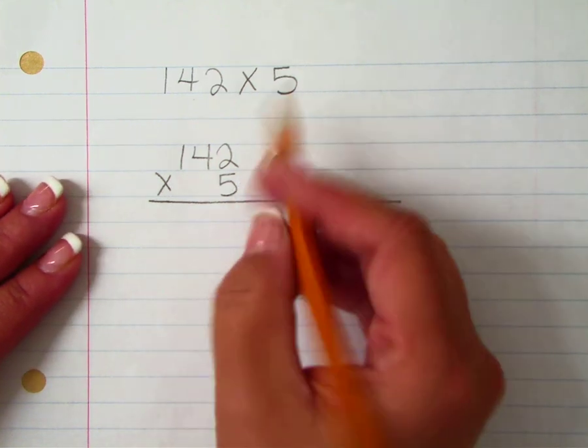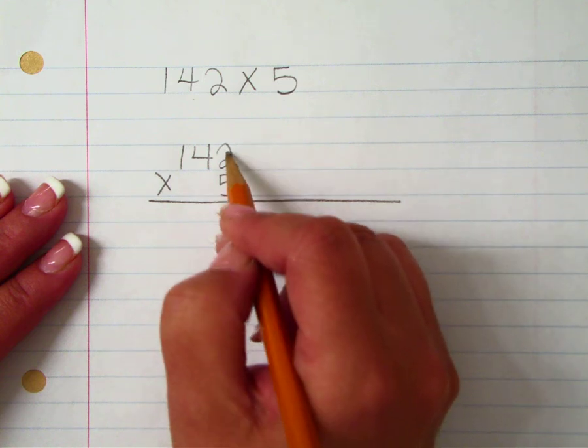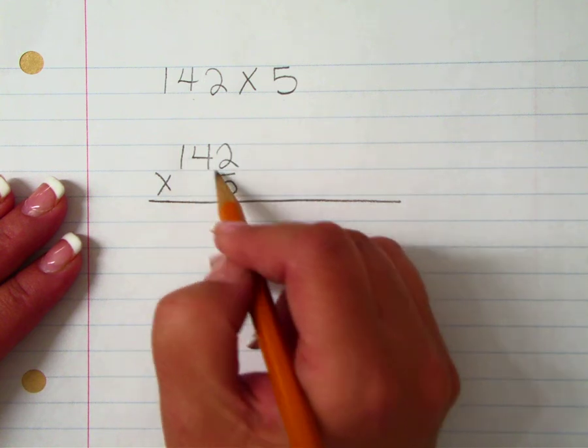You are going to multiply this bottom factor by each of the values of the digits on top.